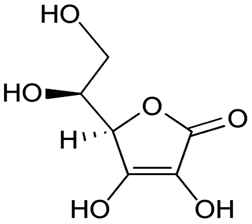Hydride transfer reagents, such as NaBH4 and LiAlH4, are widely used in organic chemistry, primarily in the reduction of carbonyl compounds to alcohols. Another method of reduction involves the use of hydrogen gas with a palladium, platinum, or nickel catalyst. These catalytic reductions are used primarily in the reduction of carbon–carbon double or triple bonds.